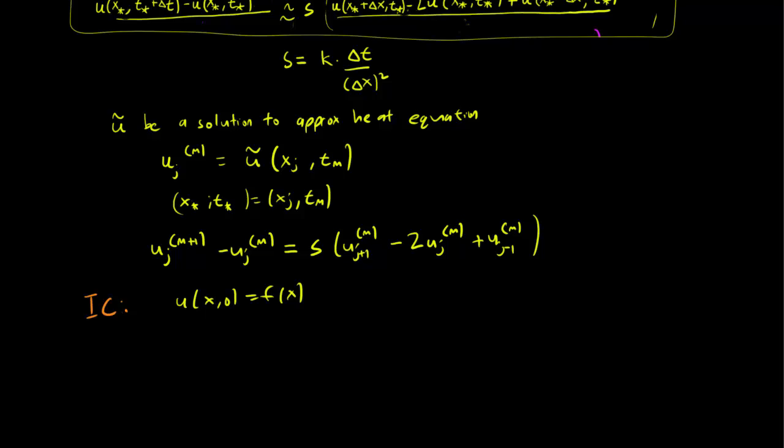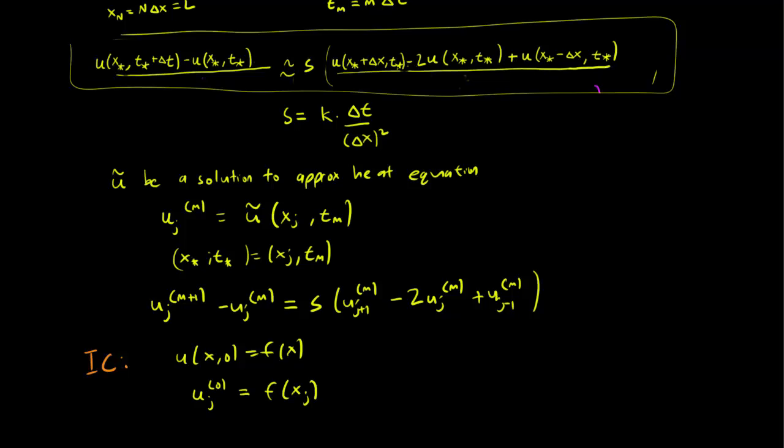But in the language of our u_j^m's, this simply can be written down as u_j^0, so 0 over here, is equal to f taken at x_j. And this gives us all the values of m equals 0.